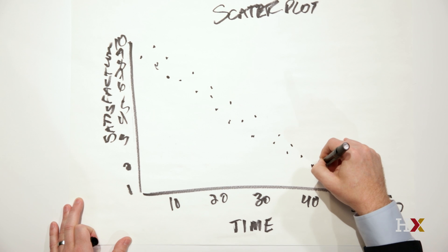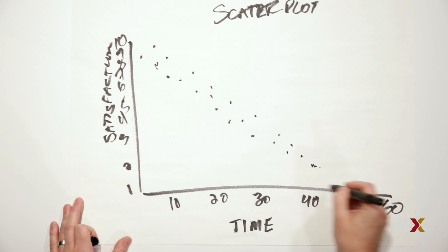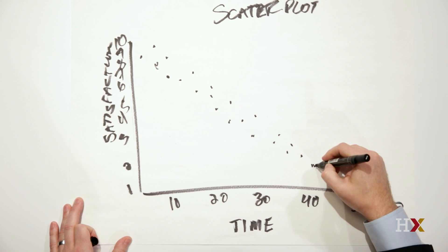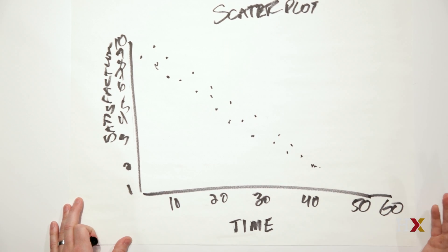And when we see data look this way, so as the time is increasing, the patient satisfaction score is dropping, we call this a negative relationship.